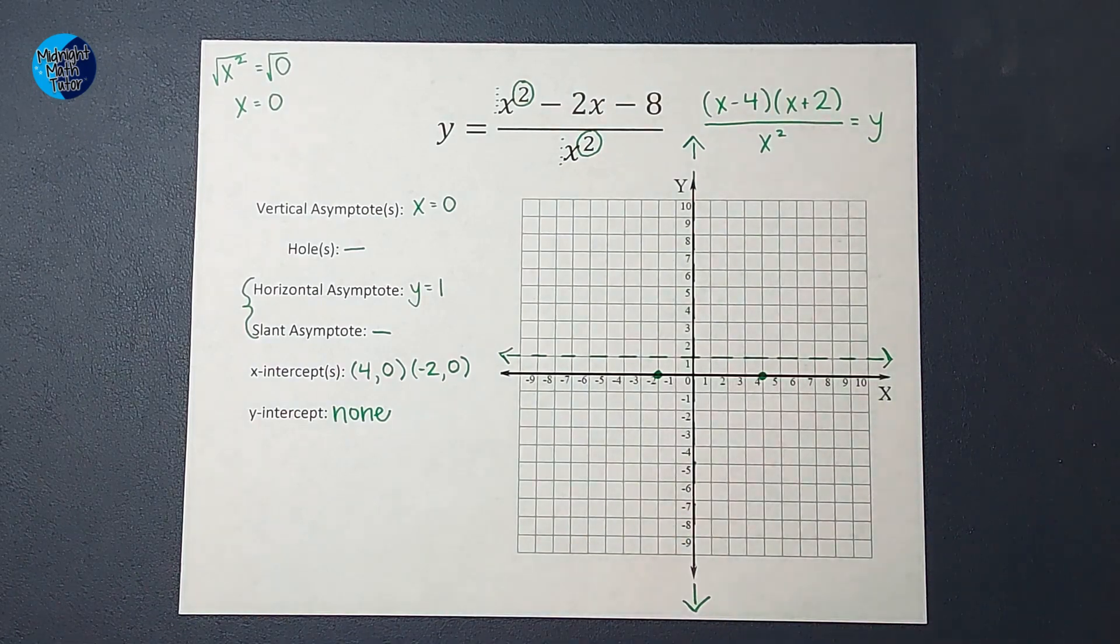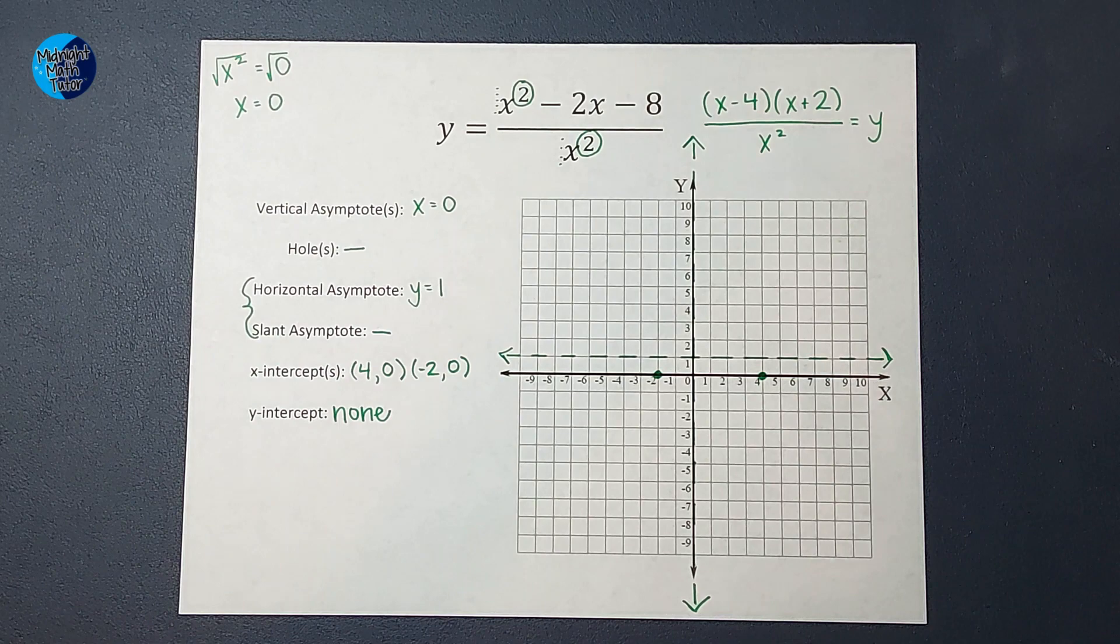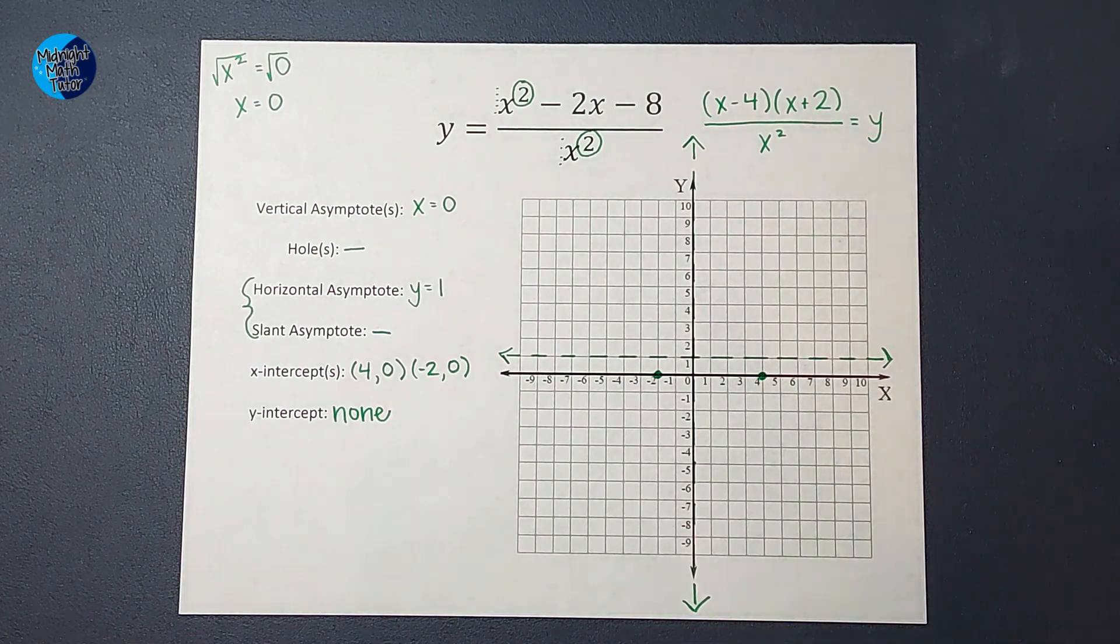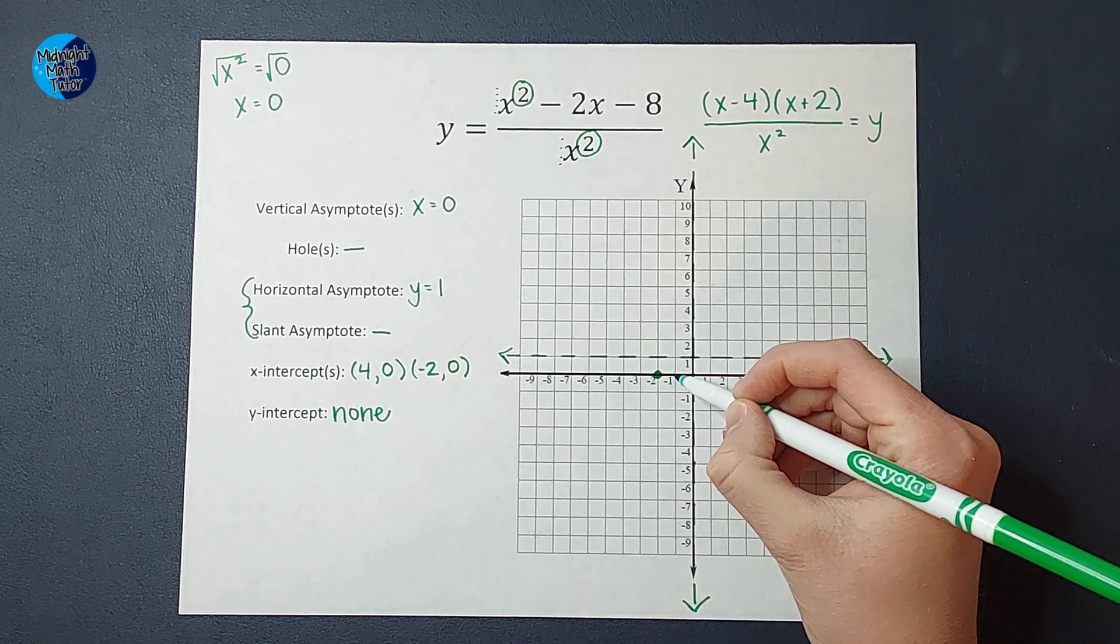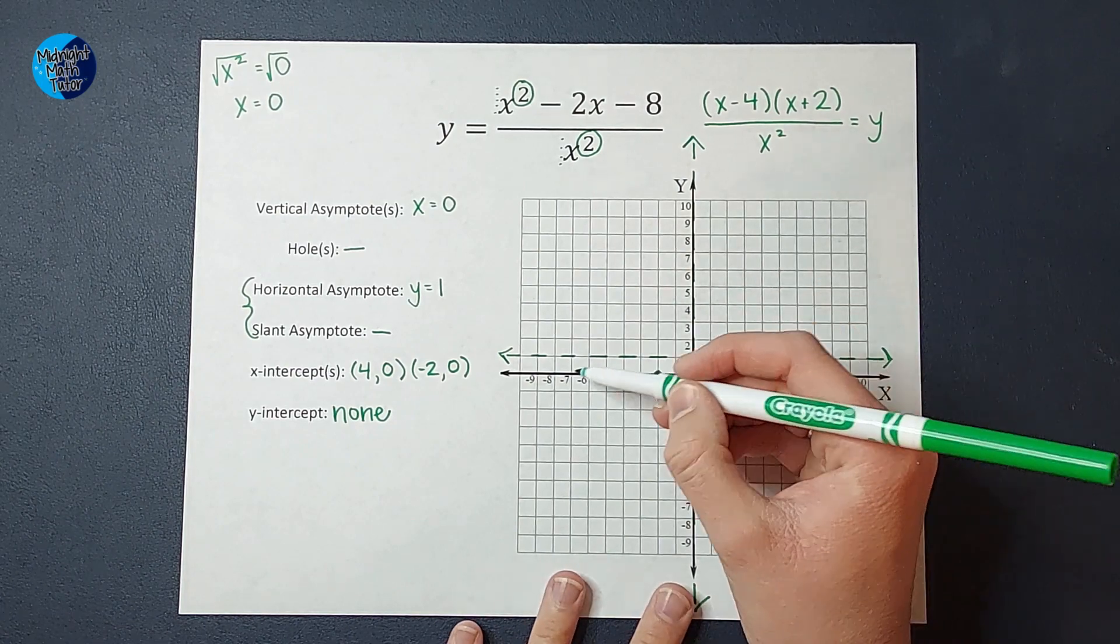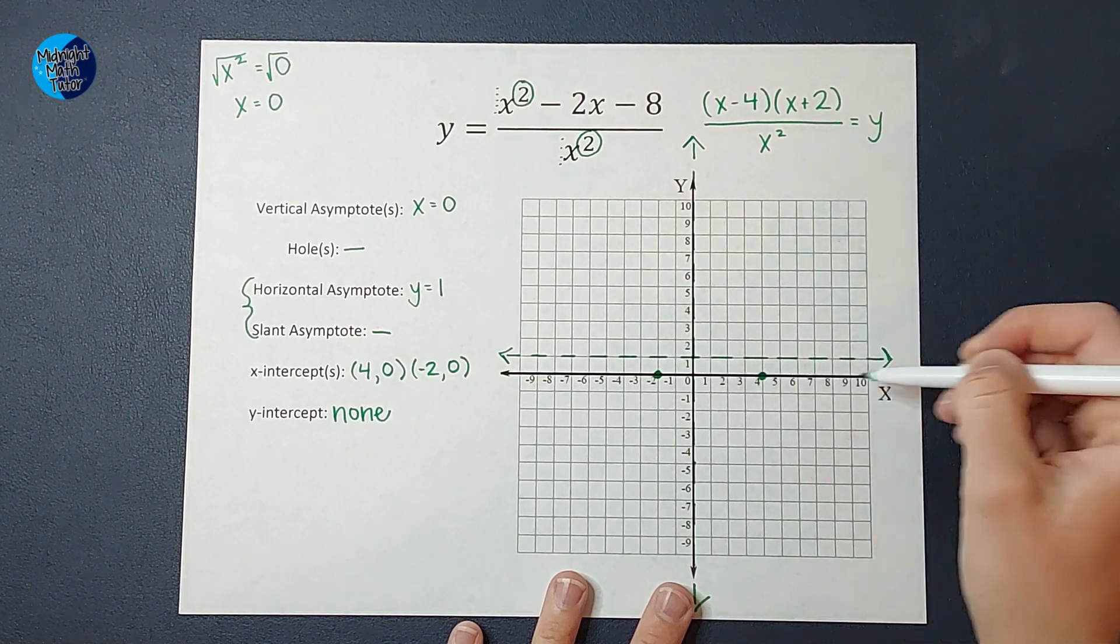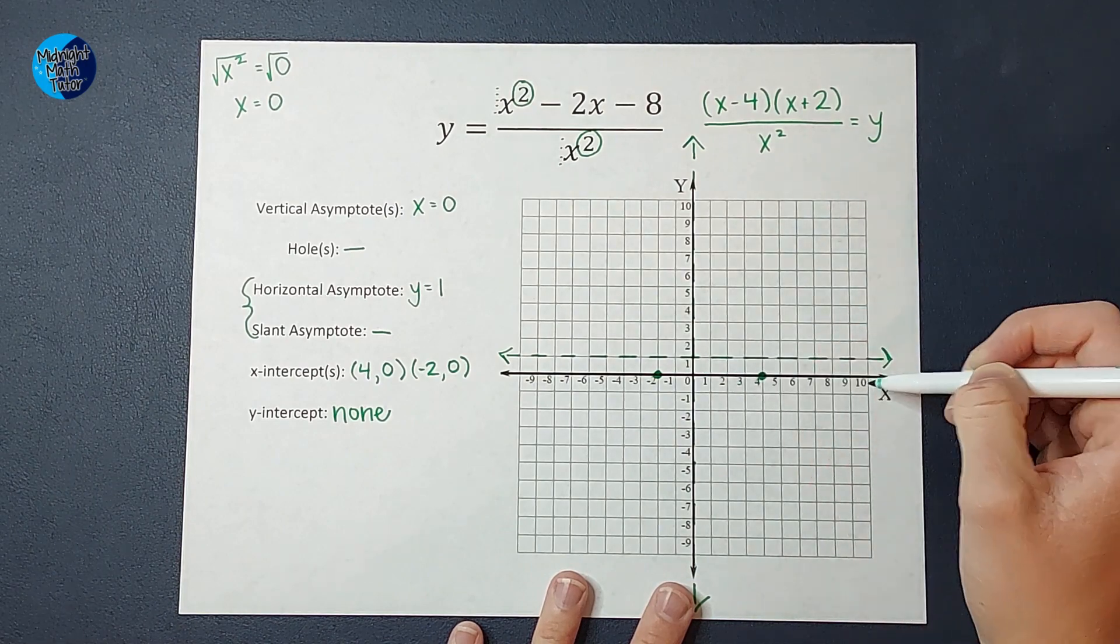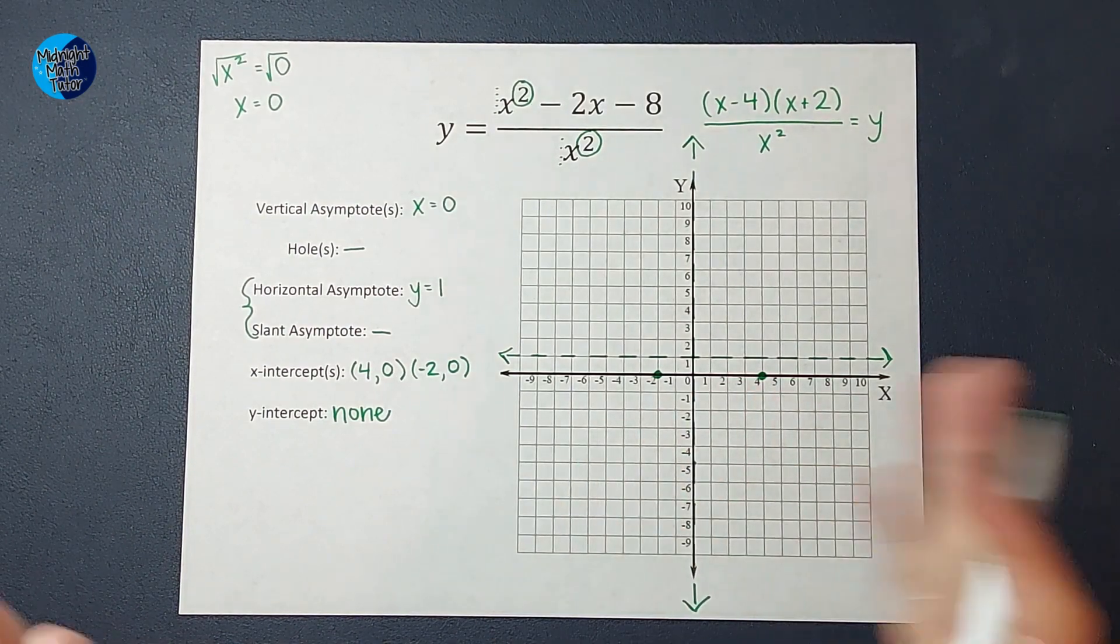All right. Okay. From here, we are almost done. We just need to figure out what this graph looks like. So the first strategy you can do is just pick some points, plug them in for x, and get a y. Plug in like negative one or plug in negative seven and see what you get. And then plug in some on this side, maybe plug in two or plug in ten to figure out what this graph looks like. You can totally do that.